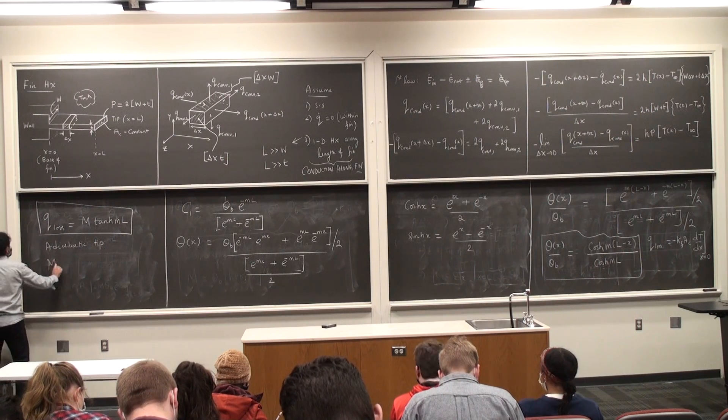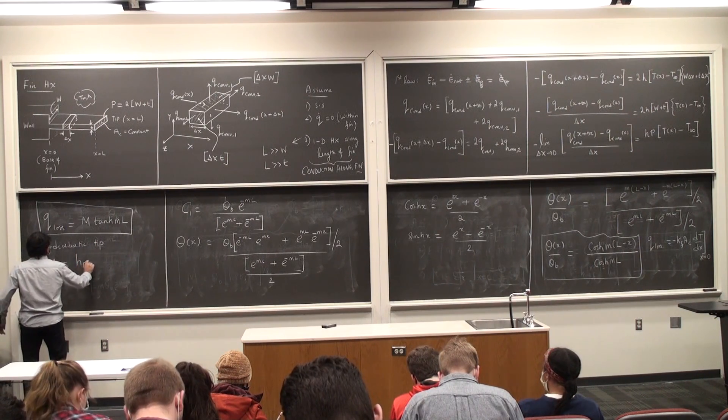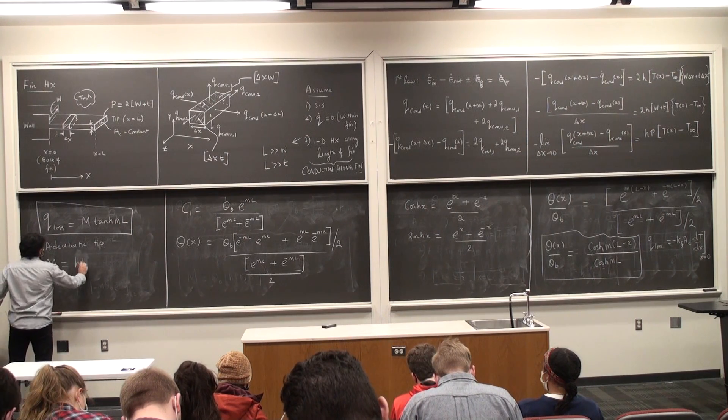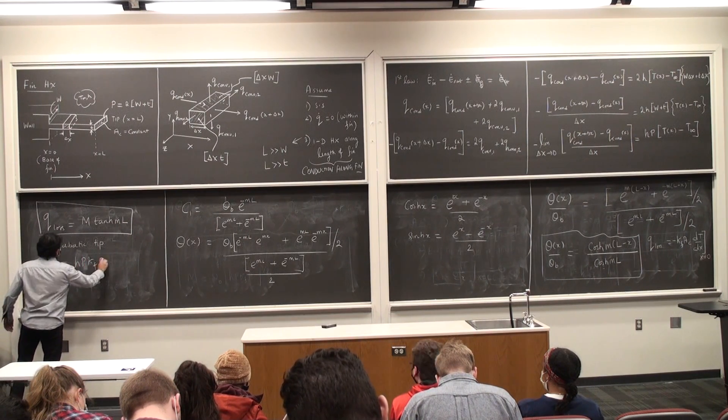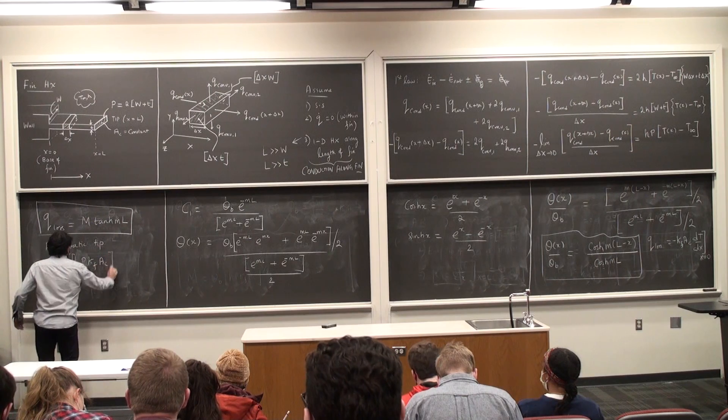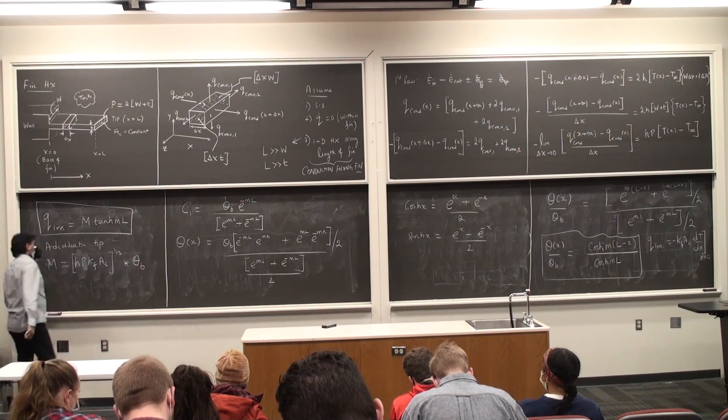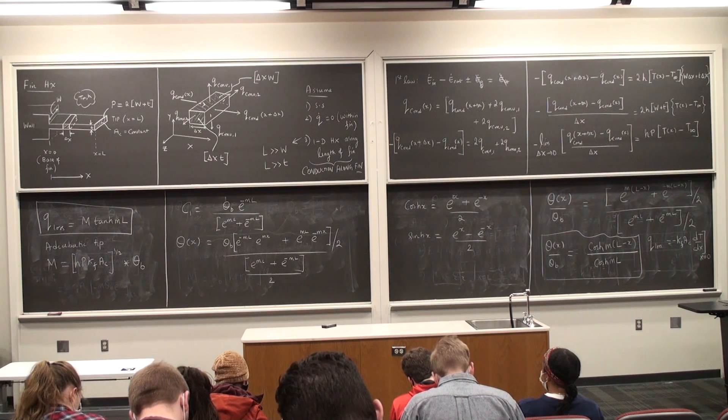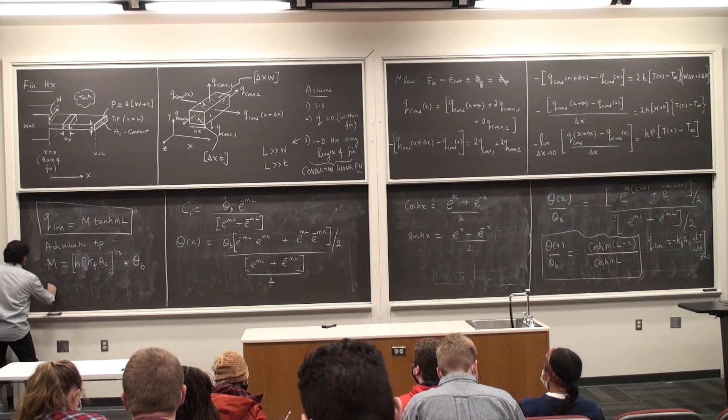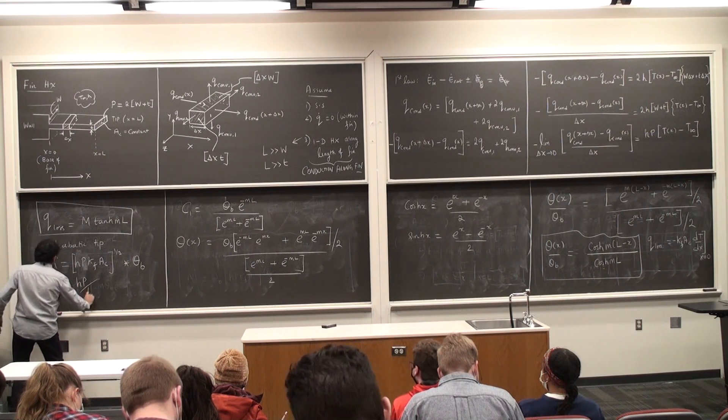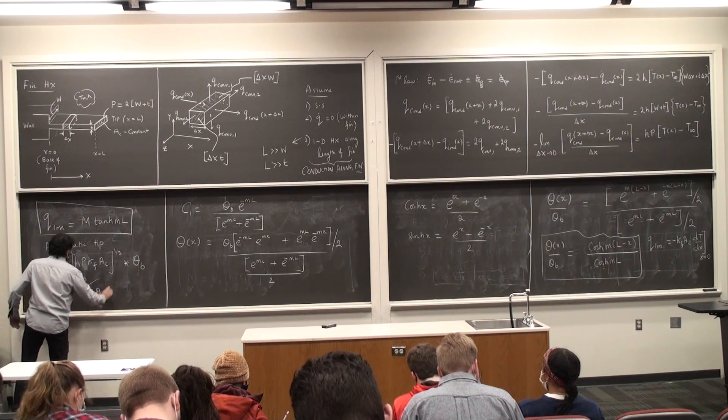Where capital M is hp multiplied by theta b. Little m square is hp divided by kf, basically.